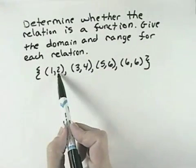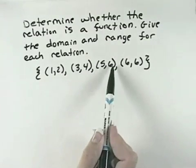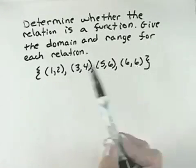So looking at this particular relation, we can see that the 1 for x goes to the 2 for y, the 3 for x goes to the 4 for y, the 5 for x goes to the 6 for y, and the 6 for x goes to the 6 for y.